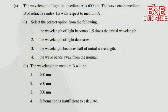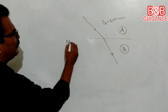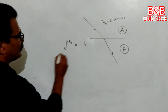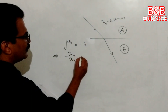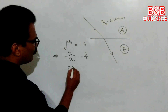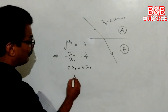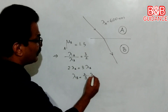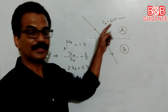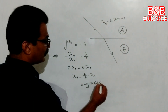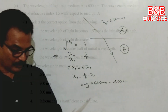Now, the next part: the wavelength in medium B will be? Once again, refractive index of medium B with respect to A is 1.5. That implies λA/λB = 3/2, so 2·λA = 3·λB, giving λB = 2/3 × λA = 2/3 × 600 nanometers = 400 nanometers. The answer is 400 nanometers.